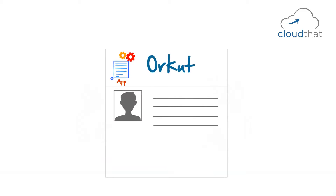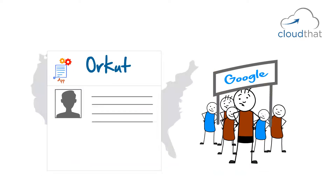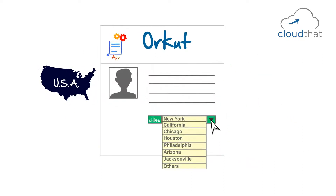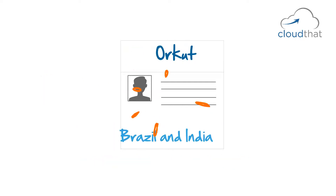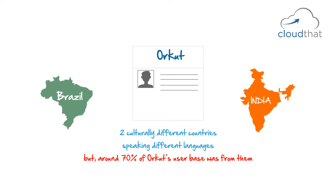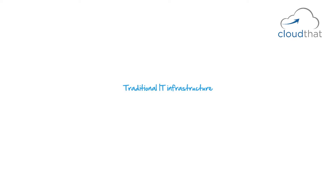Take the example of Orkut. Some guys from Google developed it, and it was so US-centric that in the list of cities you could choose as your home city, the only options were US cities — people from outside the US had to choose 'others.' Still, surprisingly, the two countries where it became most popular were Brazil and India. They are two culturally different countries speaking different languages, yet around 70% of Orkut's user base was from them. This proves that when you launch an application, you will never know where it is going to be popular.